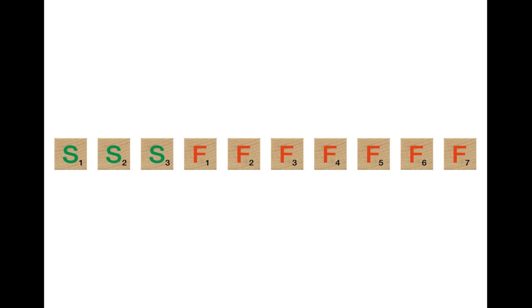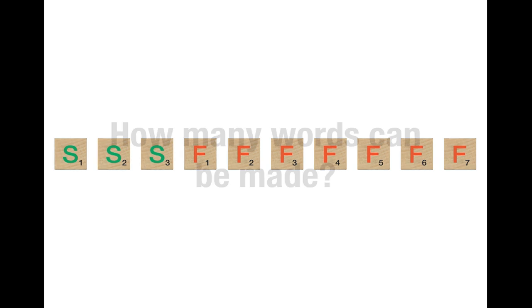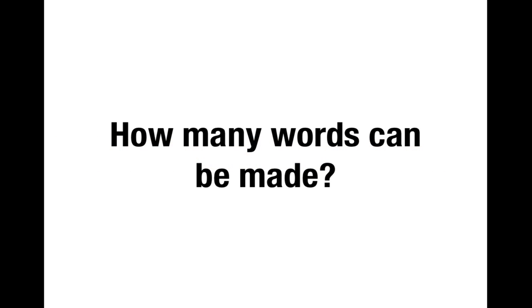So suppose that we've got 10 Scrabble tiles, 3 of which are marked with an S and 7 of which are marked with an F. 10 choose 3 is the number of different words that can be made with 3 S's and 7 F's. So the question we need to answer is: how many words can be made with these Scrabble tiles?